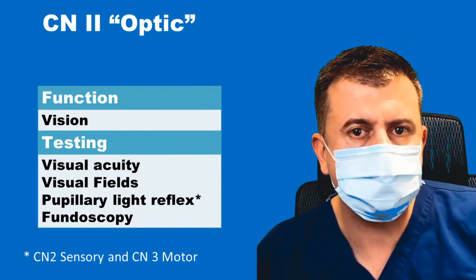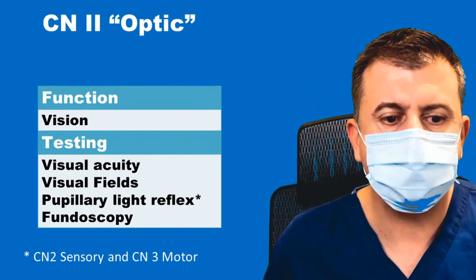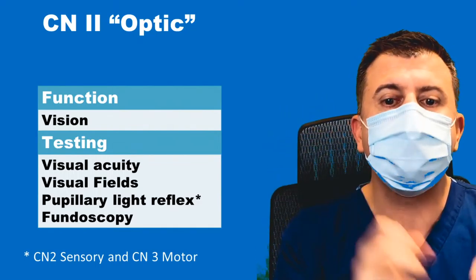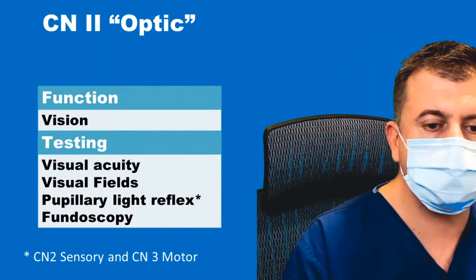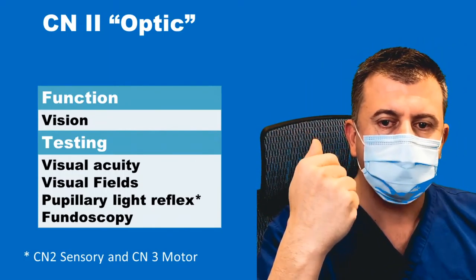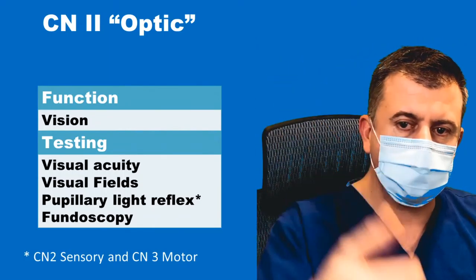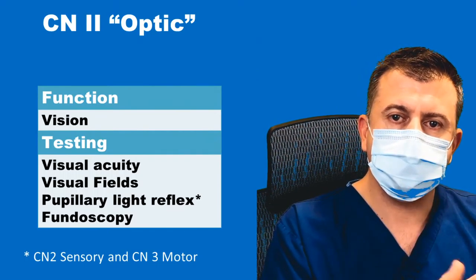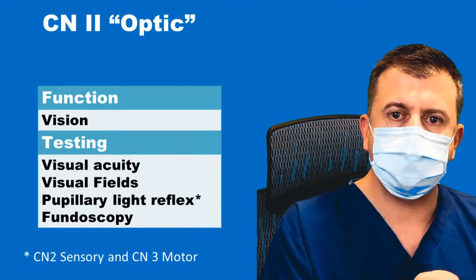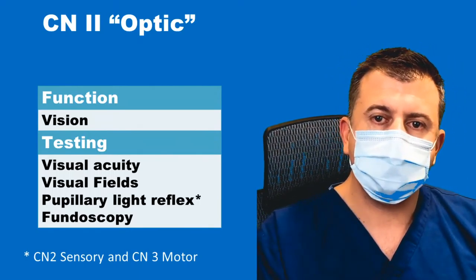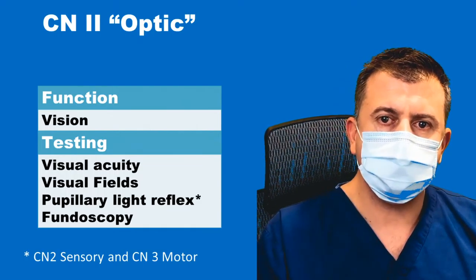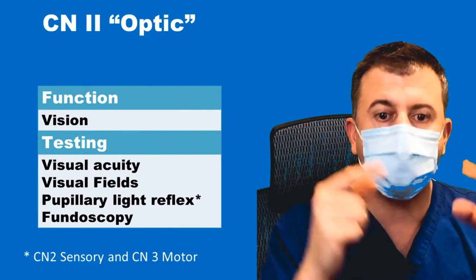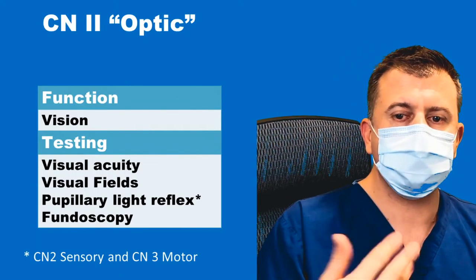When doing pupillary light reflex, remember that you need both cranial nerve two and cranial nerve three working. Cranial nerve two perceives the light, and cranial nerve three produces the contraction of the pupil. If cranial nerve two is damaged you won't perceive the light; if cranial nerve three is damaged you can't contract the pupil even if you can perceive the light. Both must be intact for the reflex to occur.